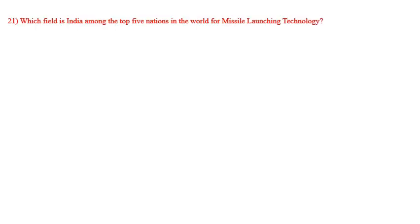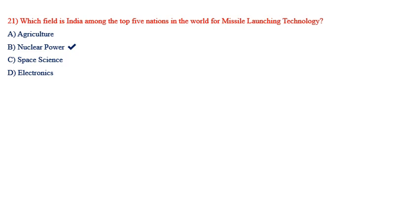Which field is India among the top five nations in the world for missile launching technology? Options: agriculture, space science, nuclear power, electronics. The correct option is space science.